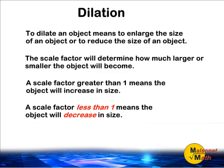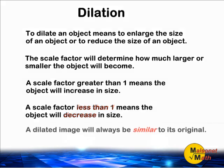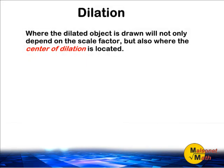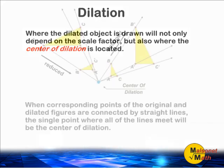Because any value less than 1 is part of a whole or a fraction, the dilated object with a scale factor less than 1 means the new object will be a fraction of its original size. Also, a dilated image will always be similar to its original. Where the dilated object is drawn will not only depend on the scale factor, but also where the center of dilation is located.